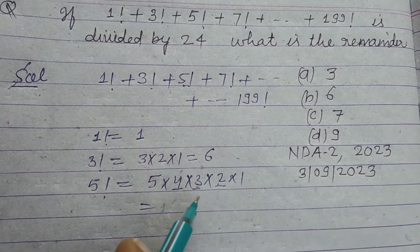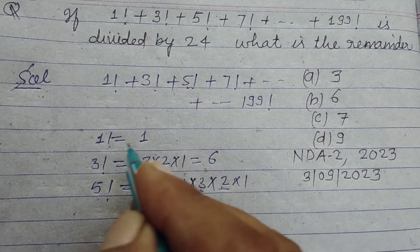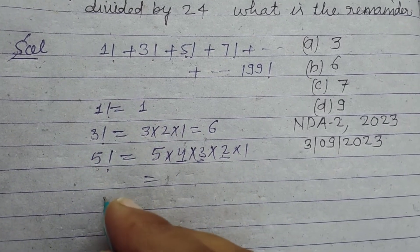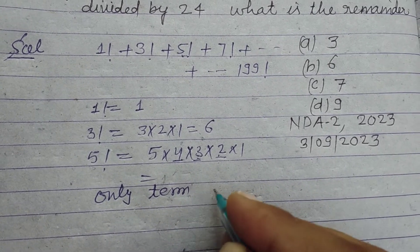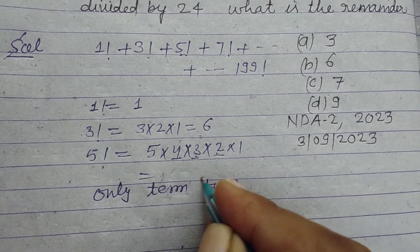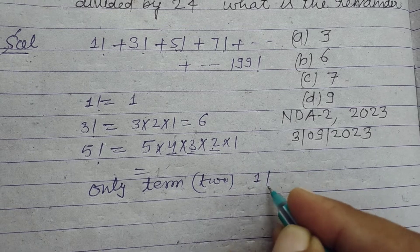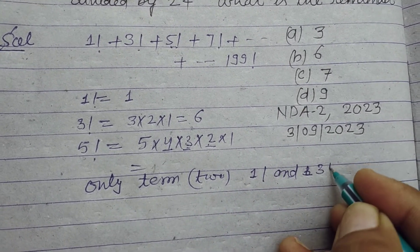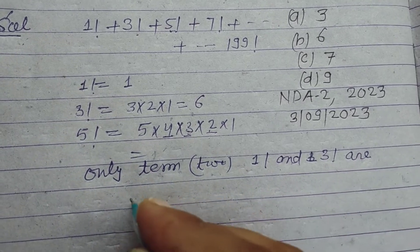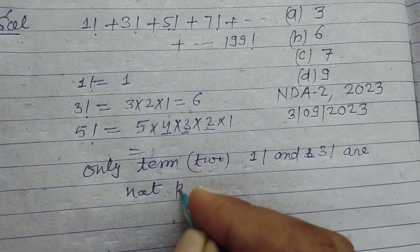Only two terms, only two terms, factorial 1 and factorial 3, are not perfectly...